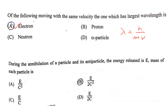The next question: during the annihilation of a particle and its antiparticle, the energy released is E. What is the mass of each particle? During annihilation, E = 2mc². Therefore, the mass of each particle is m = E/(2c²).